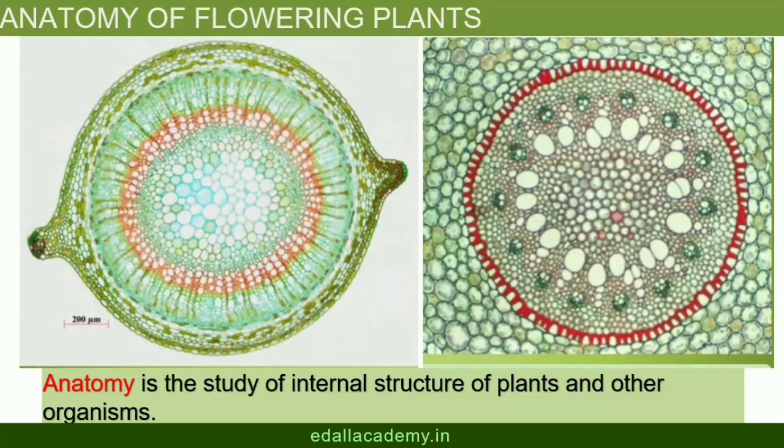Plants have cells as the basic unit. Cells are organized into tissues, and in turn tissues are organized into organs. Different organs in a plant show differences in their internal structure. Within angiosperms, monocots and dicots are also seen to be anatomically different. Internal structures also show adaptations to diverse environments.